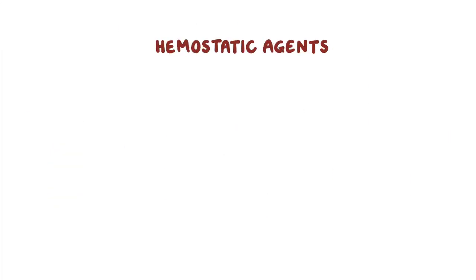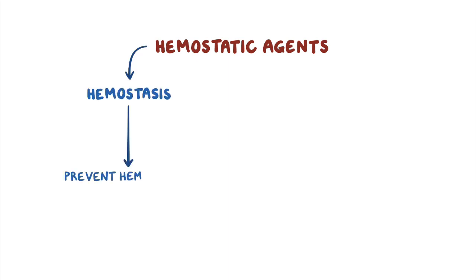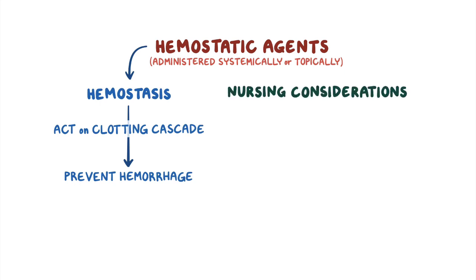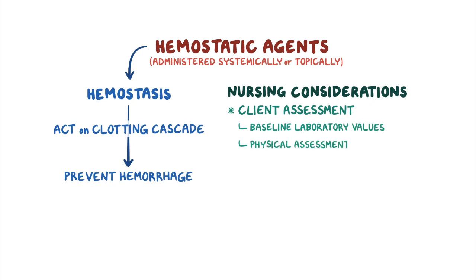As a quick recap: hemostatic agents are prescribed to induce hemostasis and prevent hemorrhage. They act on specific components of the clotting cascade and can be administered systemically or topically. Nursing considerations center around client assessment, including baseline laboratory values and physical assessment findings that indicate hemorrhage or side effects like thrombosis.